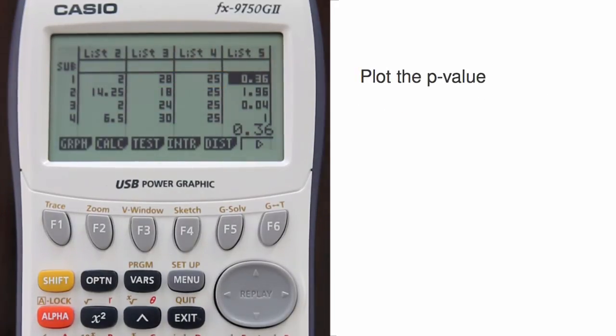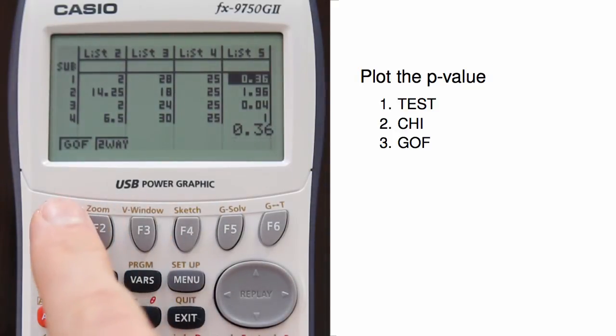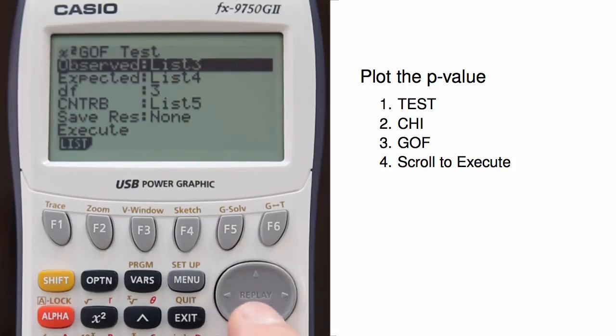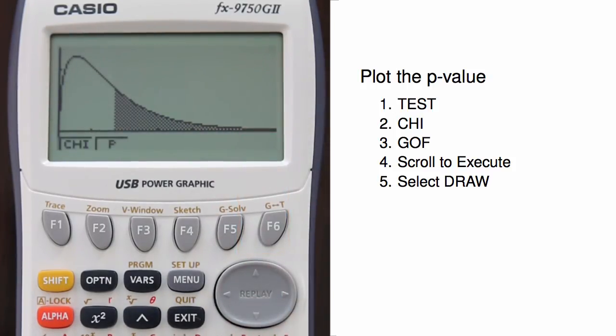Also, if you want to see a graph that visualizes the p-value, you can hop back into the test view for the chi-square goodness of fit test, scroll down to execute, and then hit F6 for draw. The shaded region will represent the p-value.